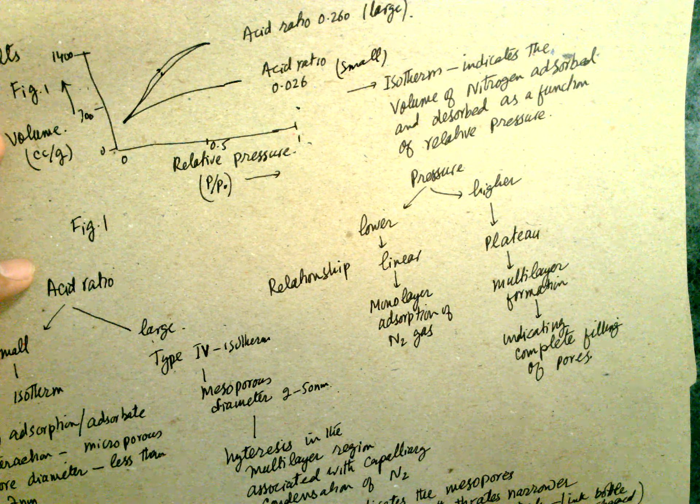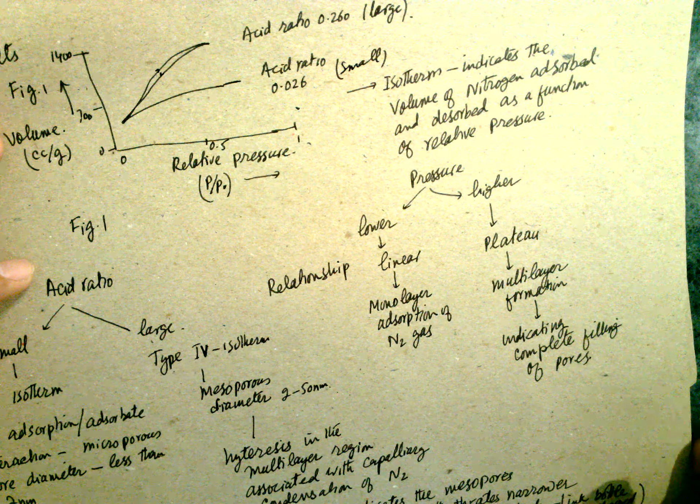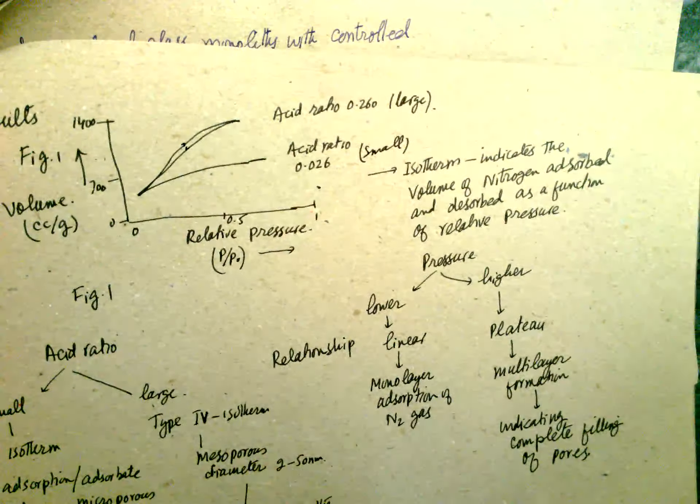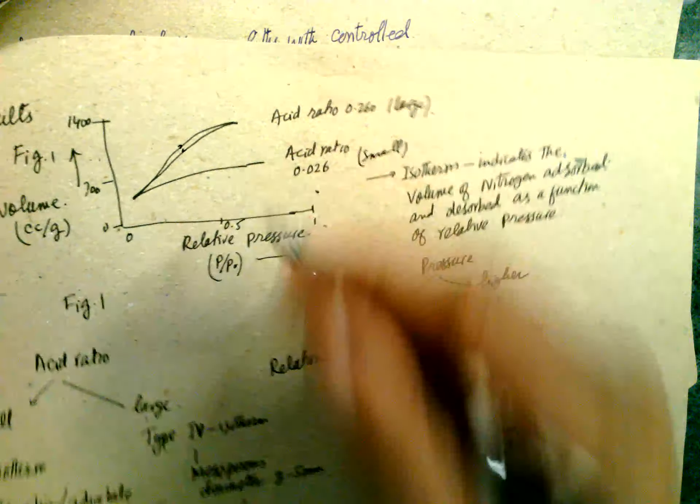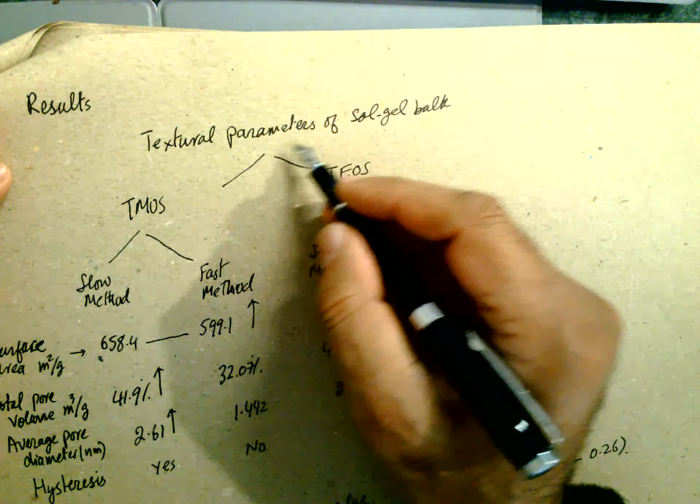Hysteresis loop indicates that the mesopores are connected with the throttle narrower than the pore body. Ink bottle shape, but here there is no ink bottle shape.